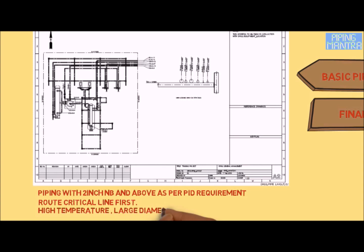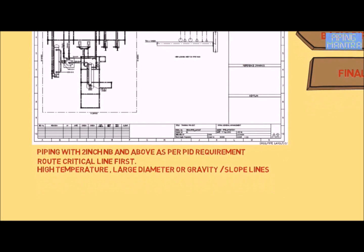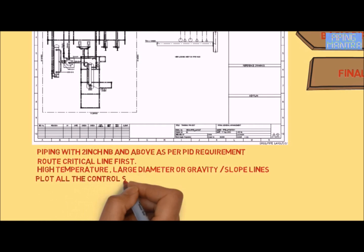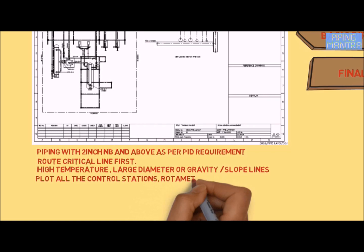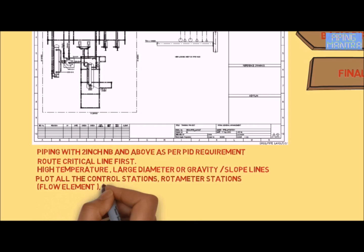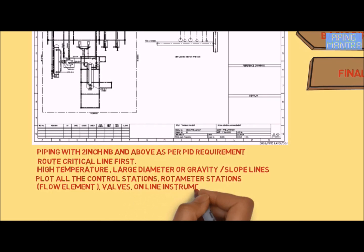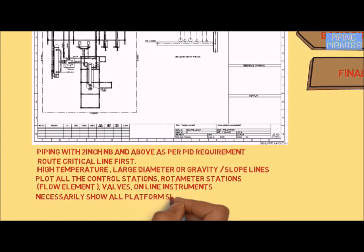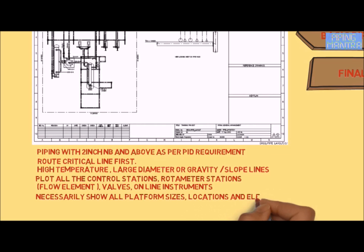Depending upon plan criticality, we can also show below 2 inch lines. We have to route critical lines first — lines with high temperature, large diameter, or gravity slope lines are considered critical. We also have to route lines with all control stations, rotameter stations, flow elements, and inline instrument connections.